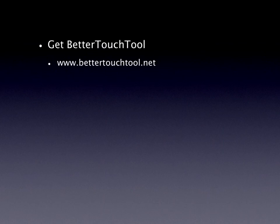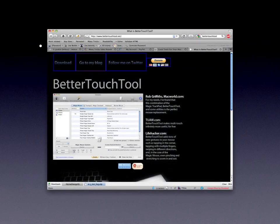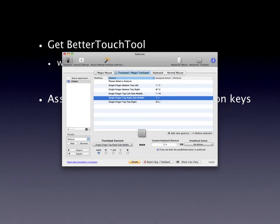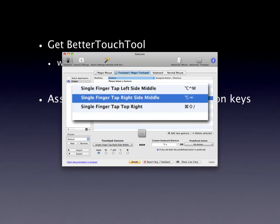The first thing you need is some sort of tool to send the WITCH activation keystrokes to the trackpad. The one I like best is called BetterTouchTool, available at BetterTouchTool.net — a donationware application. Once you've installed BetterTouchTool, you assign a gesture to activate WITCH. In my case, I used a single-finger tap on the right-side middle of my Magic Trackpad, sending Option-Tab via BetterTouchTool, which activates WITCH when I touch that area.